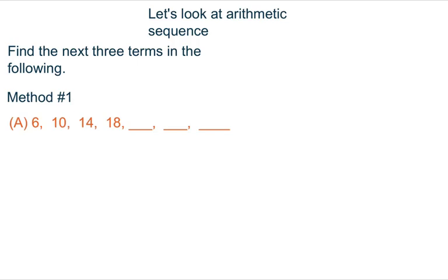Now let us take a look at a real question, and this is a PEP question. Find the next three terms in the following. Again we look at the relationship between the numbers. So it is increasing. We are going to subtract the second term from the first term. We get 4.